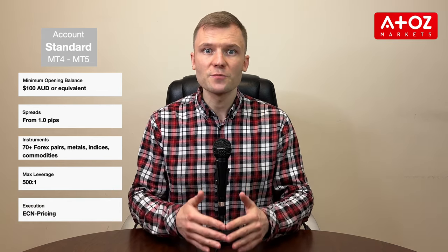This account operates on ECN pricing, ensuring transparent and fair trading conditions. One of the key advantages of the standard account is that no commissions are charged per lot. Traders can focus solely on their trades without worrying about additional costs. The minimum trade size for this account is 0.01 lot, offering flexibility for traders of all experience levels. Additionally, FPMarkets allows using expert advisors for automated trading strategies, making it convenient for those who prefer algorithmic trading.